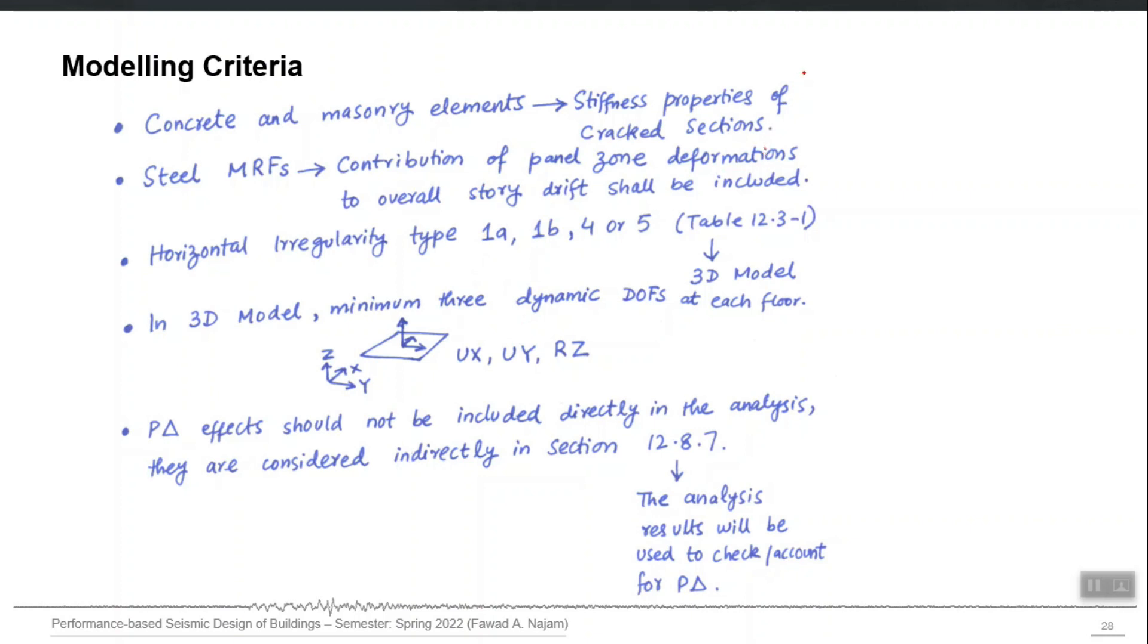All the concrete and masonry elements in your computer model, the stiffness properties for cracked sections should be applied. These are prescribed by the relevant reinforced building codes. If you are following ASCE 7, you can take these values from ACI 318.